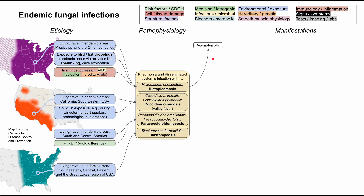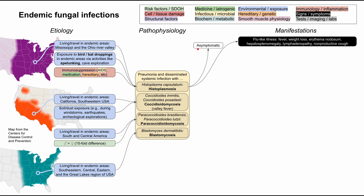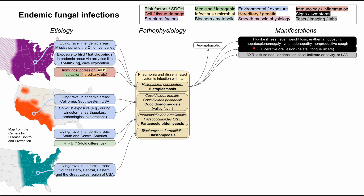Now let's talk about the manifestations and symptoms. Histoplasmosis is one of the few that can present asymptomatically. It can also present with a flu-like illness including fever, weight loss, erythema nodosum, hepatosplenomegaly, lymphadenopathy, and a non-productive cough. You can also get ulcerative oral lesions, either palatal or on the tongue. On chest X-ray, you'll notice diffuse nodular densities with focal infiltrates or cavities, and lymphadenopathy may also be visible.